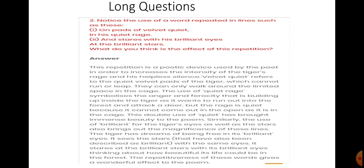Now, some long questions. Notice the use of a word repeated in lines such as these: on pads of velvet quiet and in quiet rage, and stares with his brilliant eyes at the brilliant stars. So why have the words been repeated? What do you think is the effect of this repetition? So here you find the answer. Read the answer well, try to understand it, and then note it down in your notebooks.